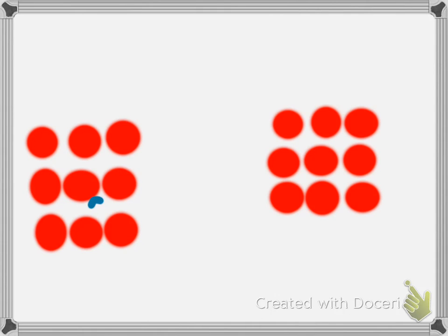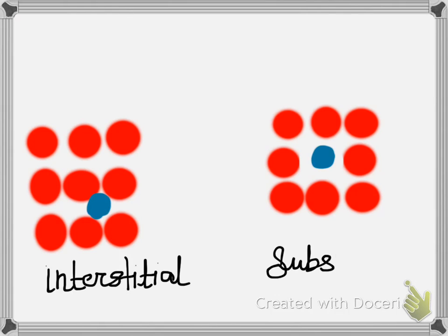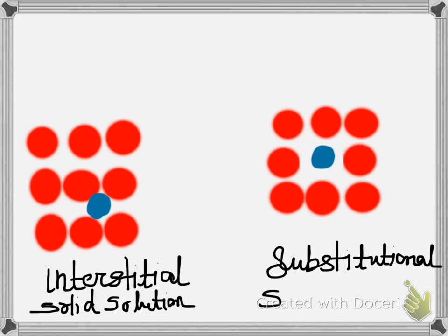If this blue circle represents the impurity atom in the first case and in the second case as I am showing, this is the interstitial type of defect and this is substitutional. So a material with interstitial impurity defect is called interstitial solid solution, and where there is a substitutional defect it is called substitutional solid solution.